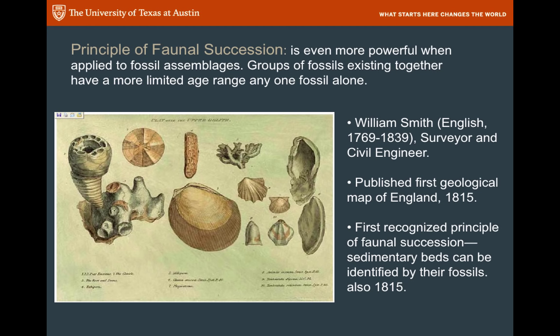Faunal succession was developed by William Smith, an English surveyor who built a lot of roads, dug a lot of road cuts, and observed a lot of fossils. He came up with the observation that when something is really old it's always on the bottom and younger stuff always replaces it. Faunal succession is especially useful when looking at a fossil assemblage — a group of fossils that always lived together — which can act like an index fossil. Smith published his work on faunal succession in 1815, and Darwin had read it before he went on his voyage to the Galapagos.